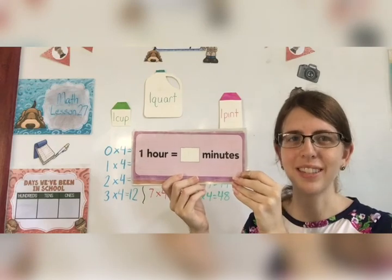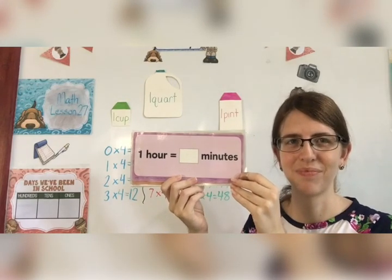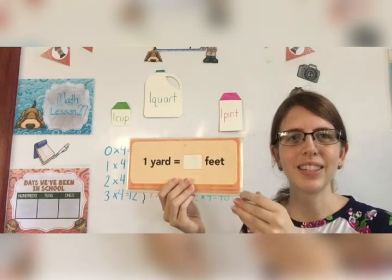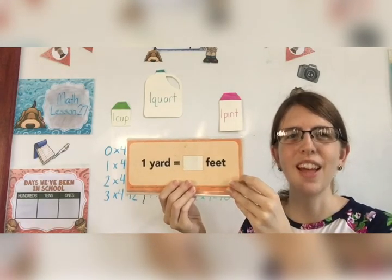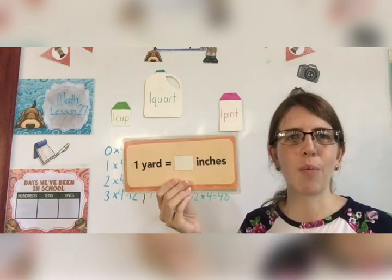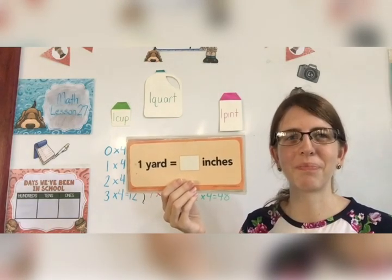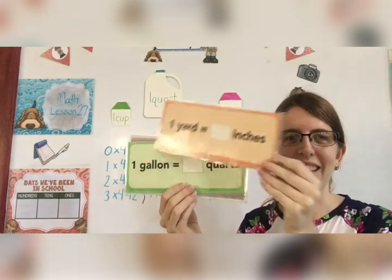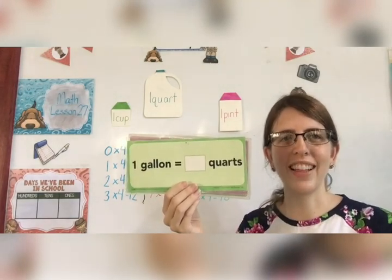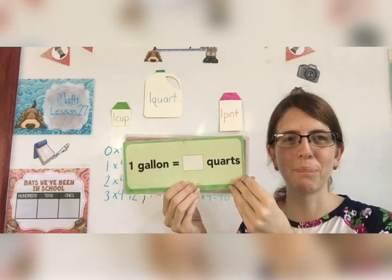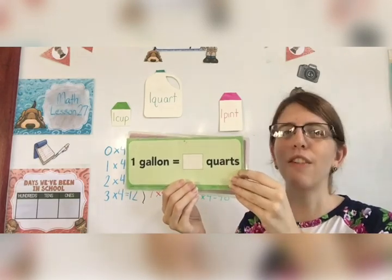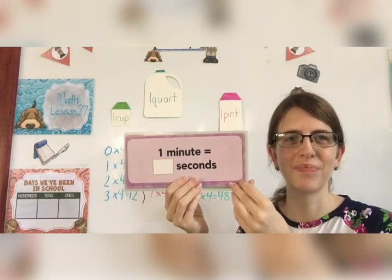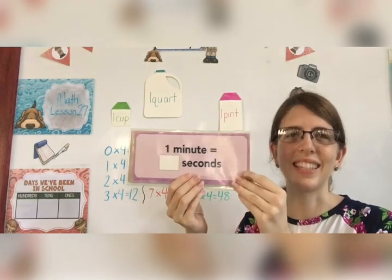1 hour equals 60 minutes. 1 yard equals 3 feet. 1 yard equals 36 inches. 1 gallon equals 4 quarts. 1 minute equals 60 seconds.